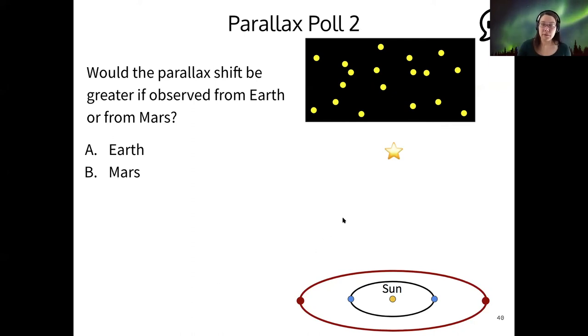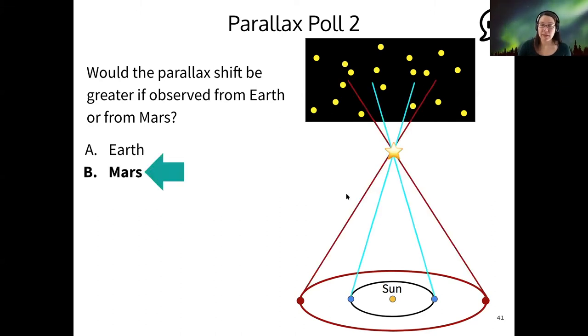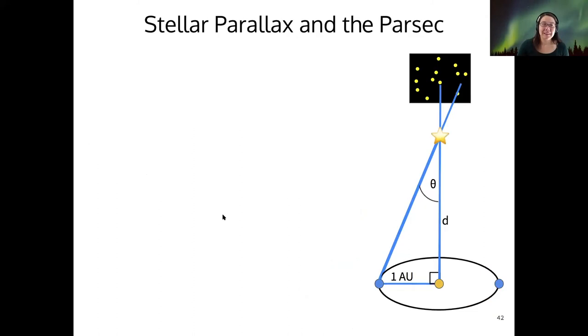Even though we can't do the experiment, most of you have chosen B, Mars, and that's exactly right. So if we were able to have a wider, what we call the baseline of the triangle that we're going to construct to measure distance, then we would be able to measure a greater parallax shift.